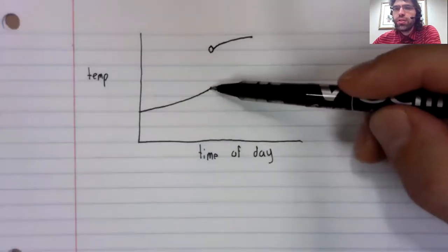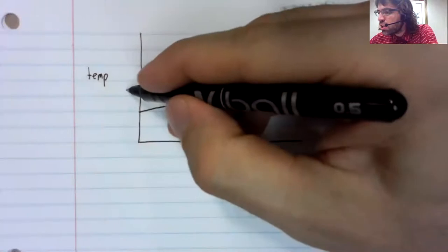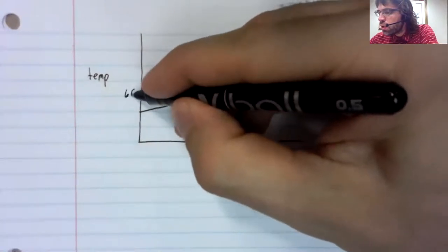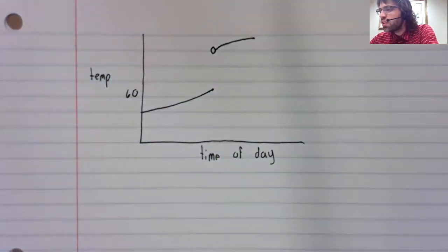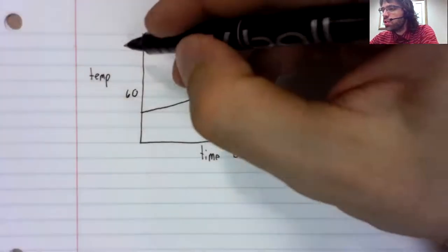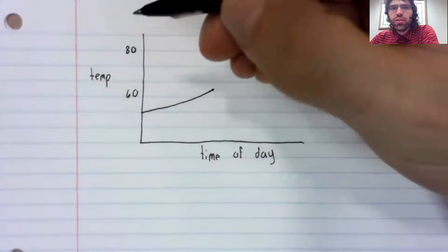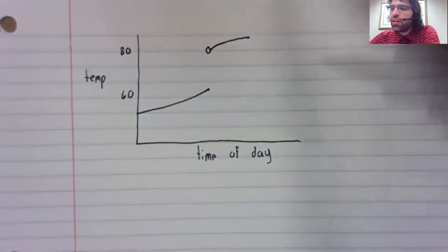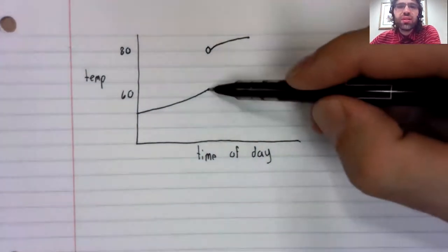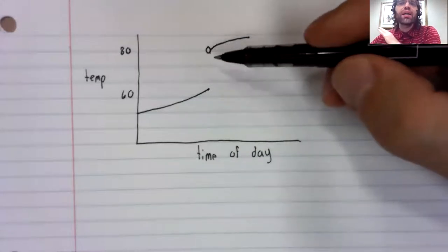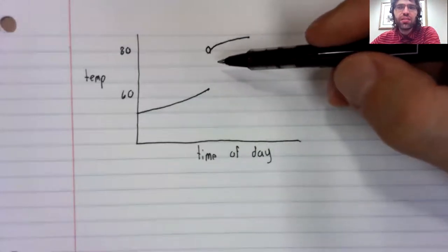This graph probably doesn't strike you as very realistic. One moment, the temperature was here, let's say 60 degrees. Another moment, it's 80 degrees. And it just goes from 60 to 80 instantaneously.